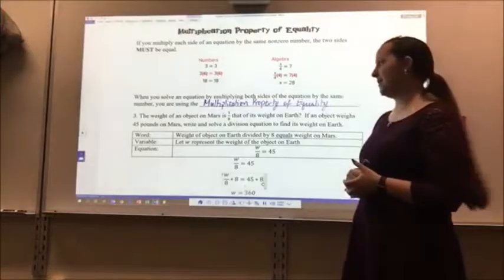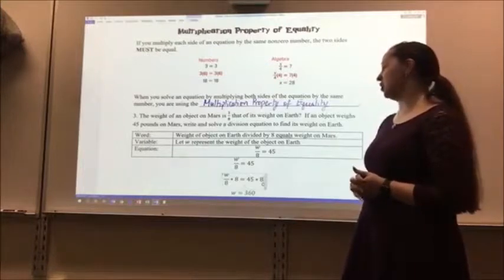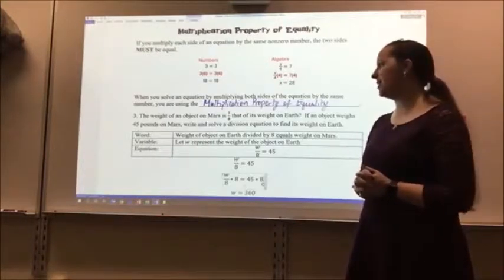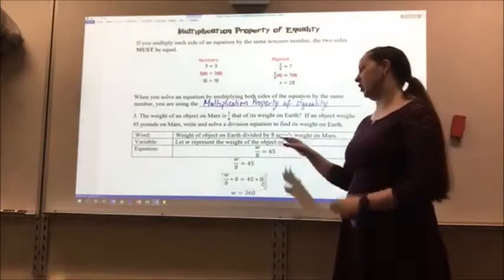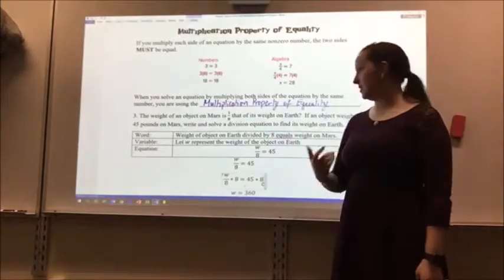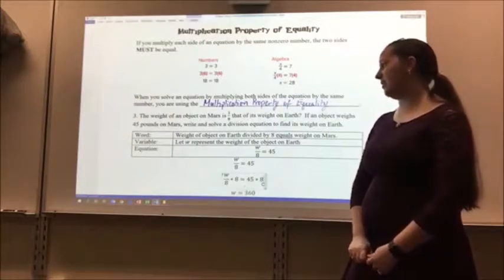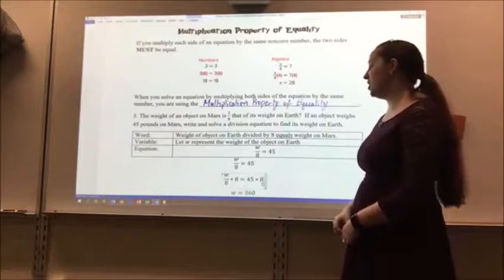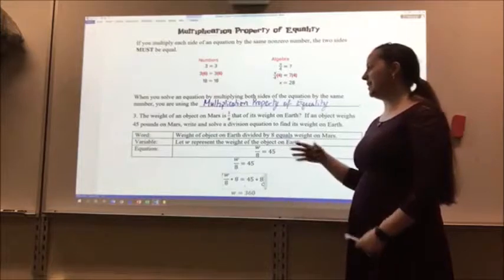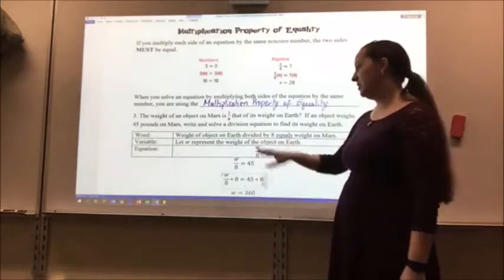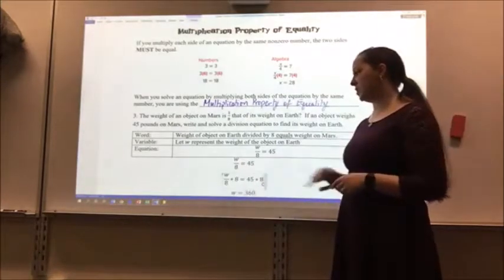All right, let's take a look at an example. The weight of an object on Mars is one-eighth that of its weight on Earth. If an object weighs 45 pounds on Mars, write and solve a division equation to find its weight on Earth. Let W represent the weight of the object on Earth. And my equation is W over 8 equals 45. I'm dividing the weight of the object, W, by 8, and that equals its weight on Mars.